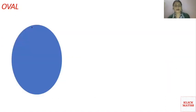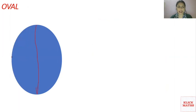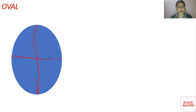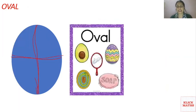The next shape is an oval. What is an oval? An oval is mainly a circle shape but it is wider in one direction than another. So an oval is wider in one direction than the other. You can see some examples: this is an oval, this mirror is also an oval, this is an oval, and this mat is also in an oval shape.